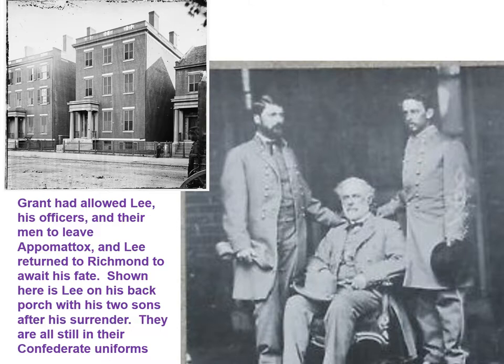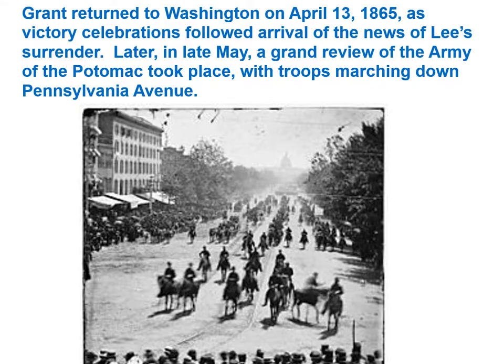Grant had allowed Lee's officers and men to leave Appomattox. Lee was escorted by a Union guard to Richmond, where a friend let him stay at his house. He was under a kind of house arrest while they decided what to do with him. Here's a picture of Lee on his back porch with his two sons after his surrender — they're all still in their Confederate uniforms, as they really didn't have much of anything else. Grant returned to Washington on April 13th, 1865, as victory celebrations followed the news of Lee's surrender.